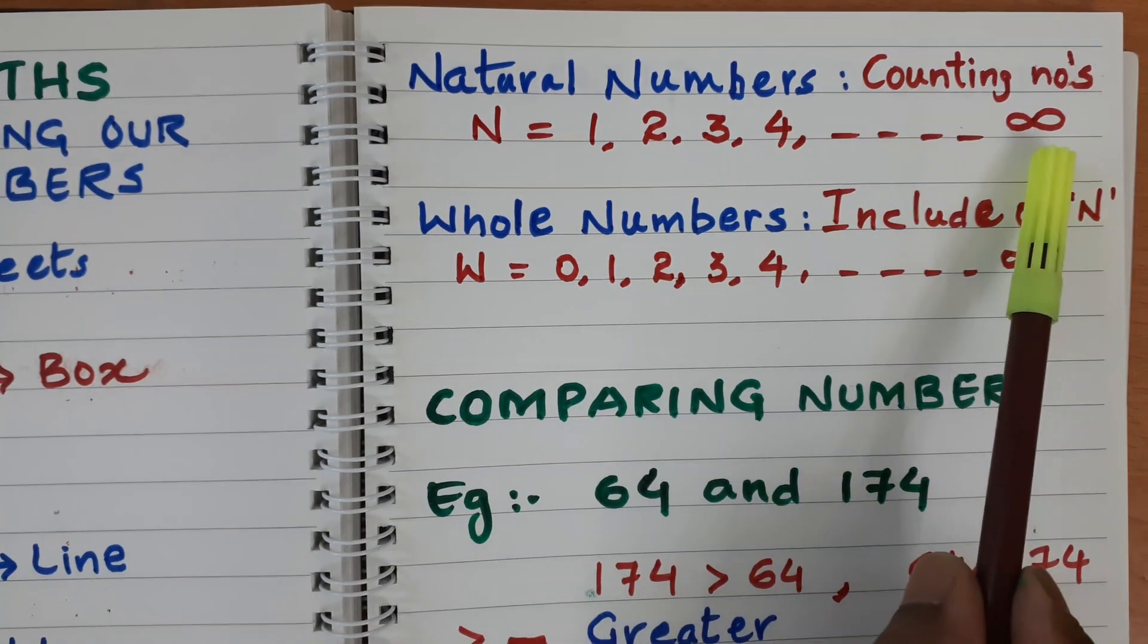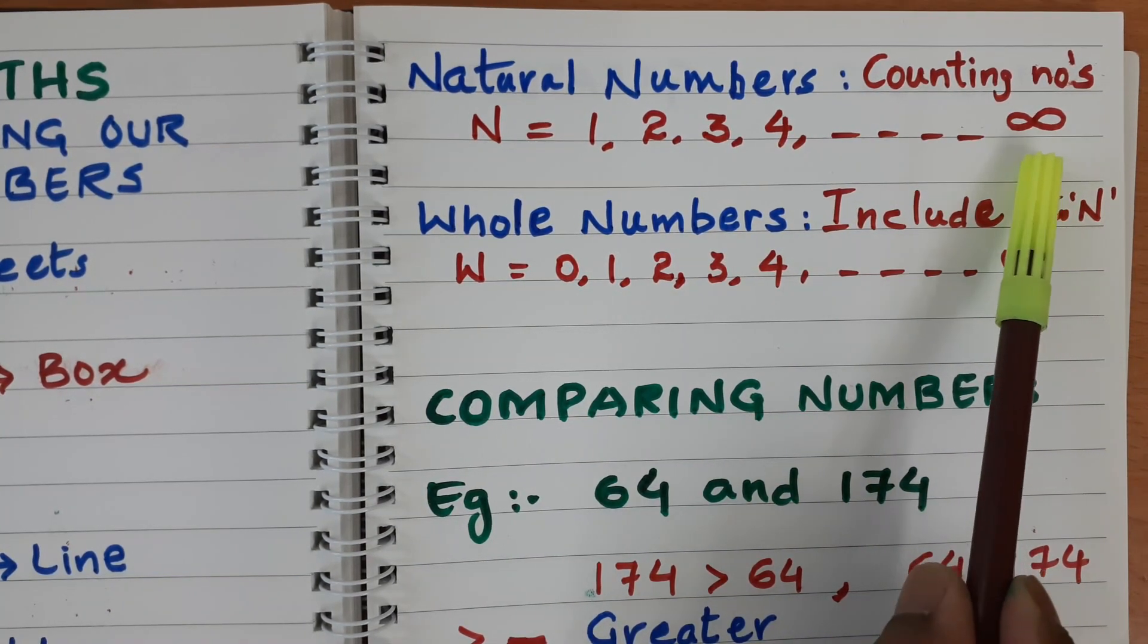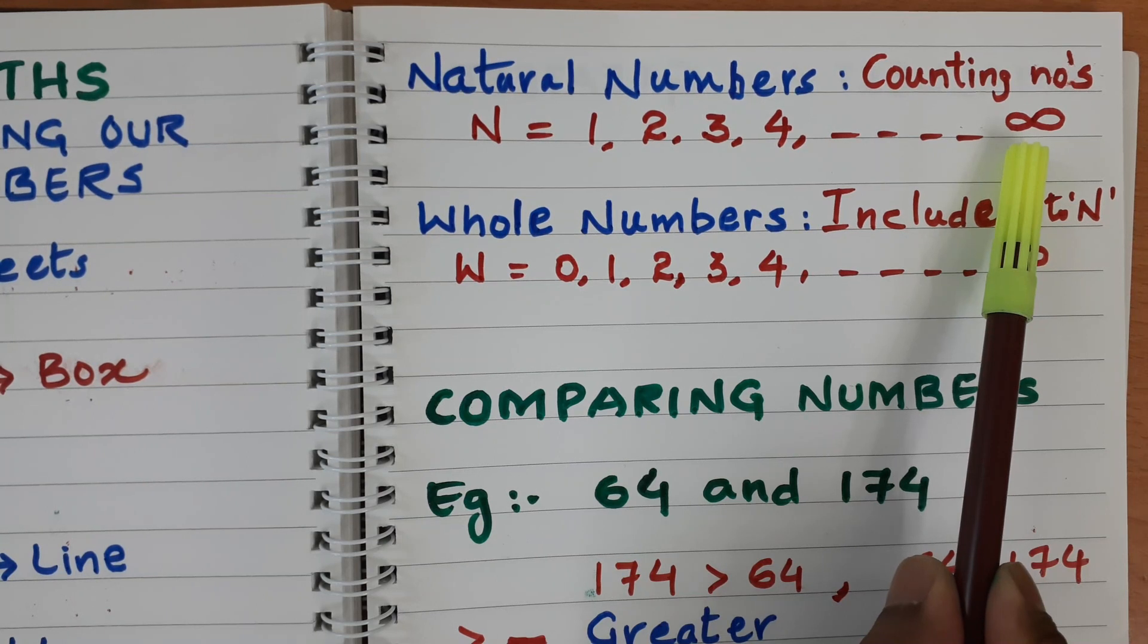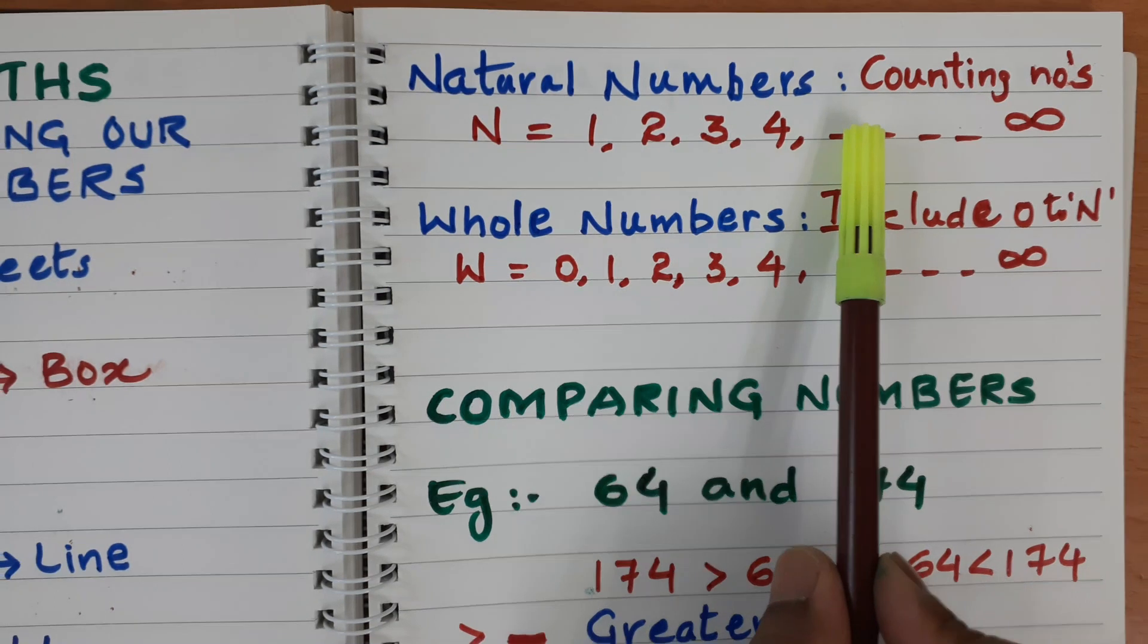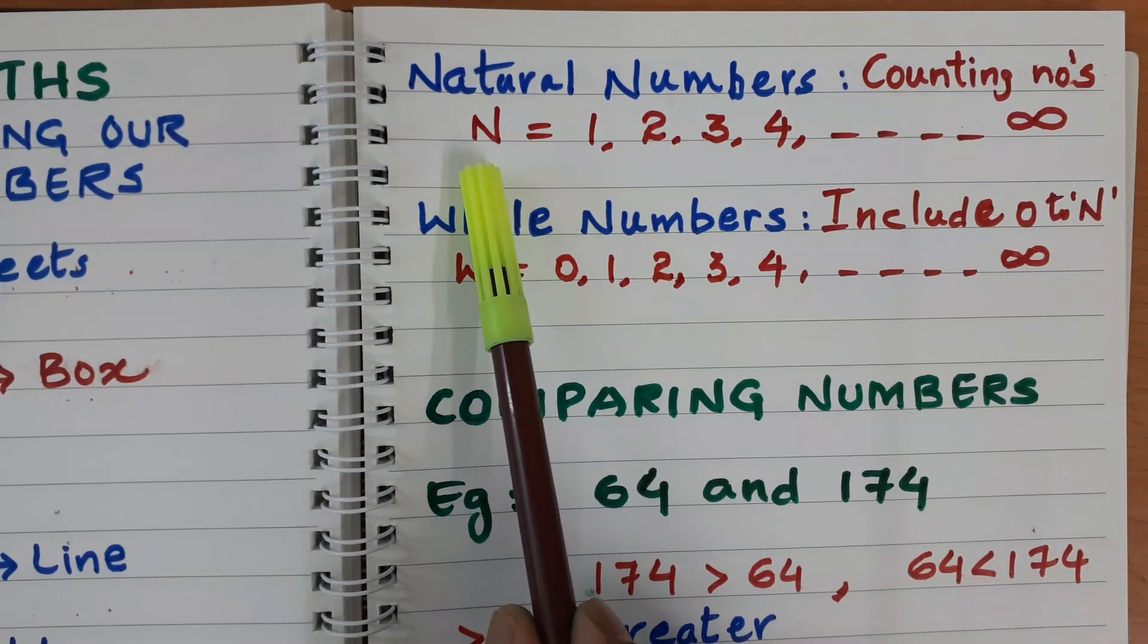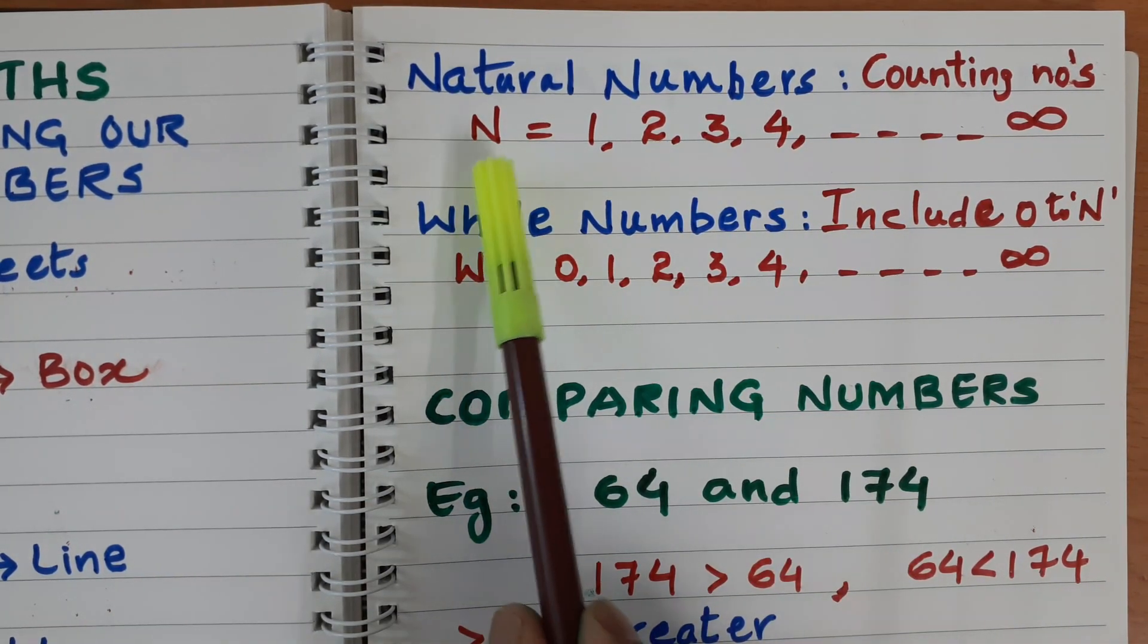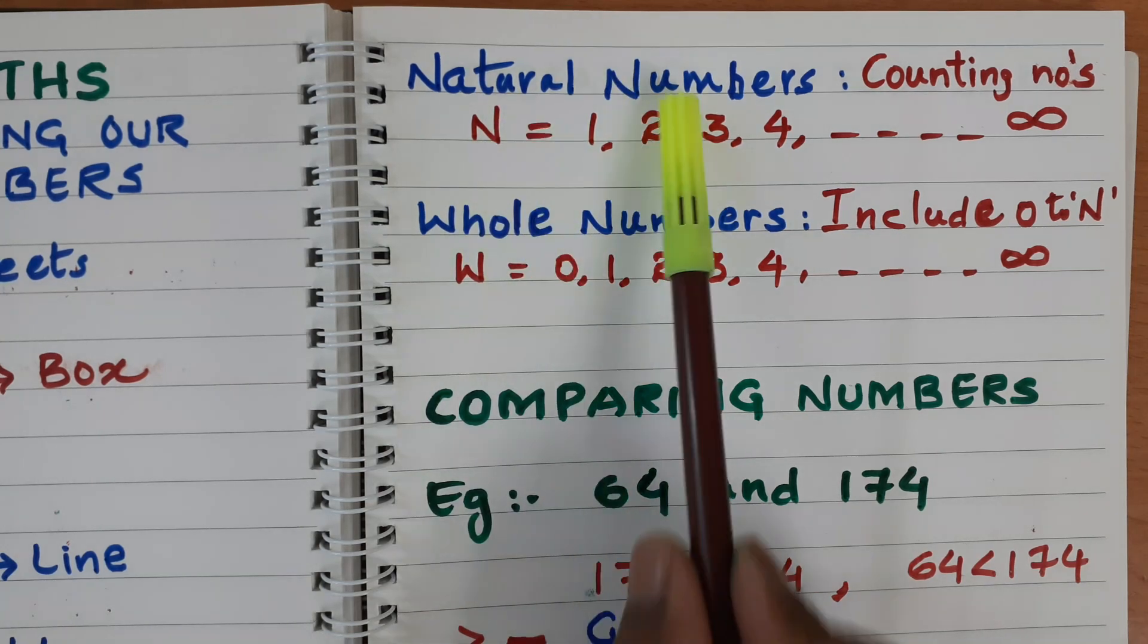This symbol is infinite, means endless. The numbers are endless. So natural numbers are counting numbers. It is represented by n. n means natural numbers.